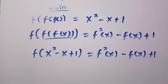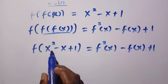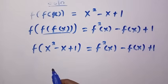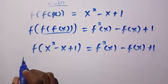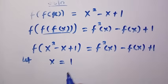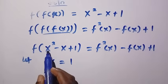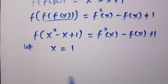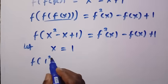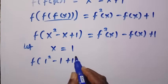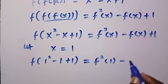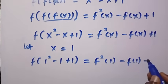So after getting this, if this is x squared minus x plus 1 as the domain of this function, suppose I let x equal 1. Every place we see x here we will be replacing it with 1. So we are going to have f of 1 squared minus 1 plus 1 equals f squared of 1 minus f of 1 plus 1.